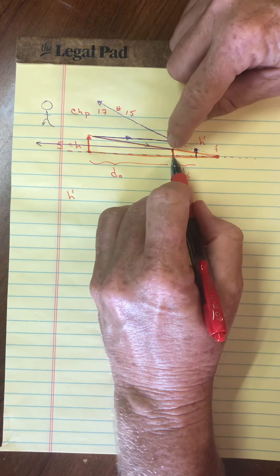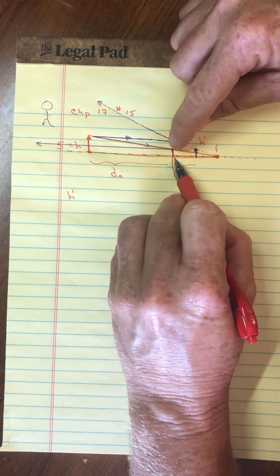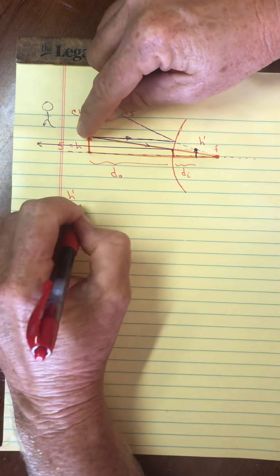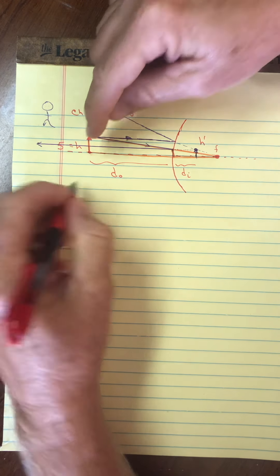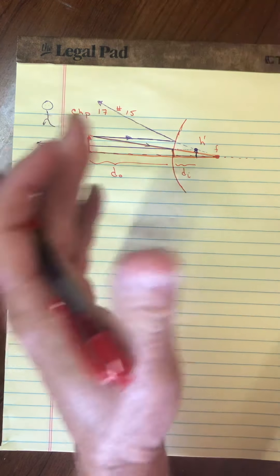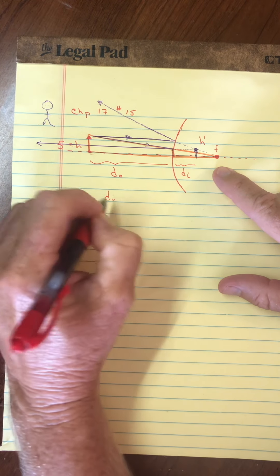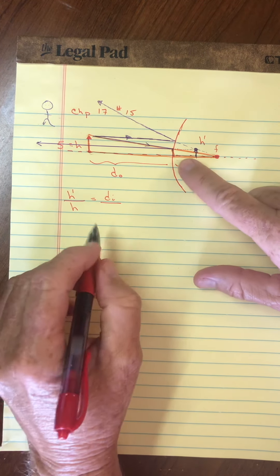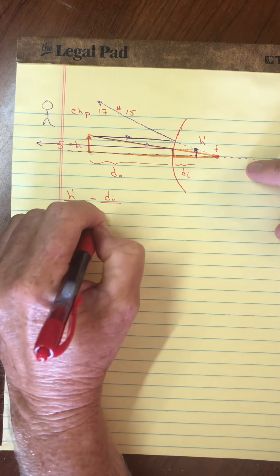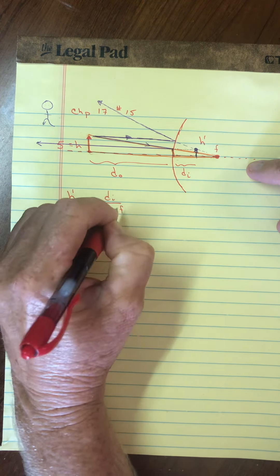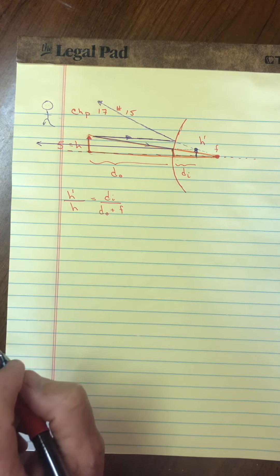Look what we get mathematically when we compare these two similar orange triangles. The height h prime, the height of the image, and the height of the object, that ratio would be the same as the length of their bases. So this would be the distance of the image, and this would be the distance of the object plus the focal length.